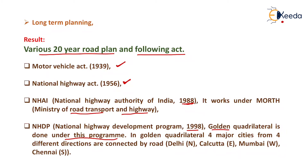Under NHDP, the Golden Quadrilateral project connects four major cities: Delhi in the north, Kolkata in the east, Mumbai in the west, and Chennai in the south. These four cities are connected by road, forming the Golden Quadrilateral. That is all about the development of highway planning in India. Thank you very much, students.